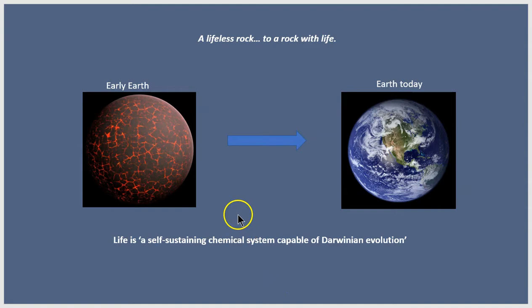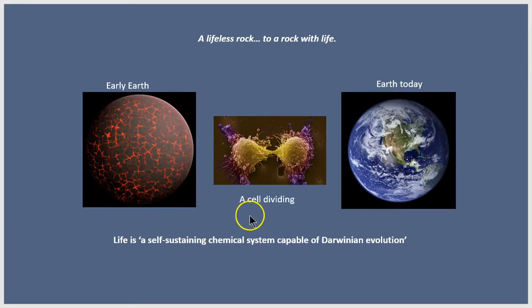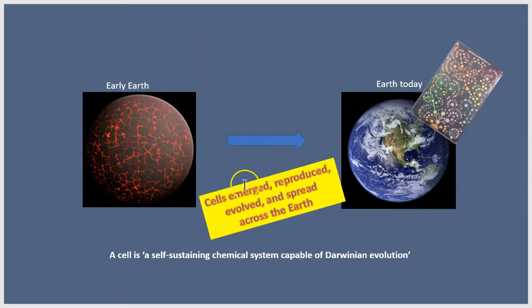Now the story of life on Earth is quite amazing, really. We start with a lifeless rock, the early Earth, and we end up with a rock with life, with millions of species covering every corner of the globe. NASA defines life as a self-sustaining chemical system capable of Darwinian evolution, and we'll unpack that definition later. But the key step was the formation of the first living things, what we call cells. So life is cellular on Earth. And these cells emerged somehow, somewhere on Earth. And again, we'll take a look at what is known about that.